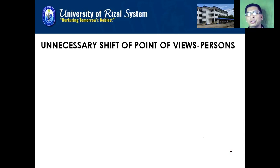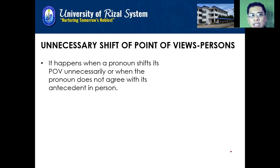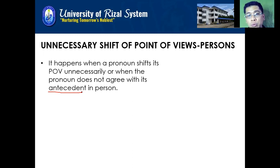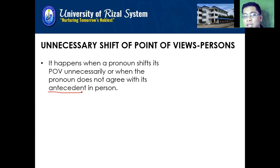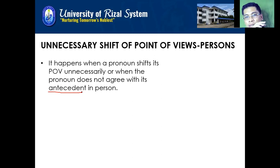We also have unnecessary shift of point of view or persons. It happens when a pronoun shifts its POV unnecessarily, or when the pronoun does not agree with its antecedent in person. The antecedent is the subject to which the pronoun refers. For example: 'Coach Natanio is handling the English subject. He is also teaching literature.' The pronoun 'he' refers to Coach Natanio, so the antecedent of 'he' is Coach Natanio.